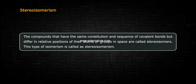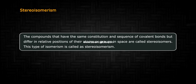5. Stereoisomerism: compounds that have the same constitution and sequence of covalent bonds but differ in the relative positions of their atoms or groups in space are called stereoisomers. This type of isomerism is called stereoisomerism.